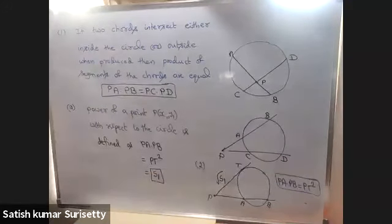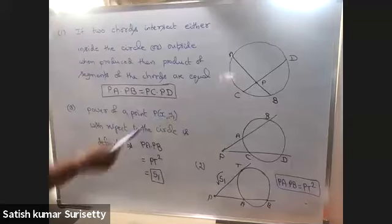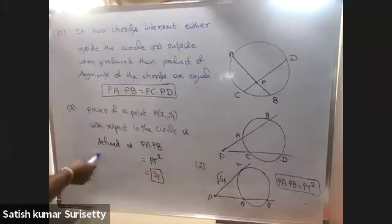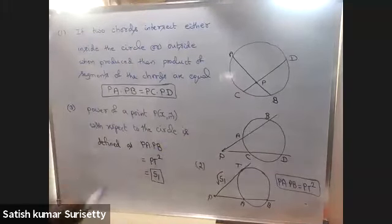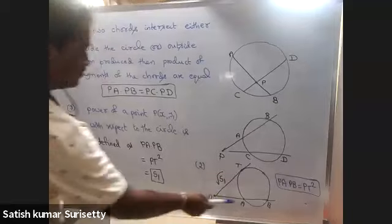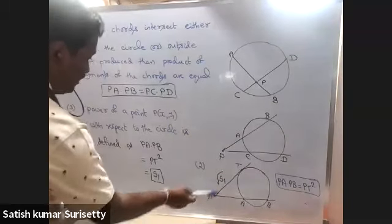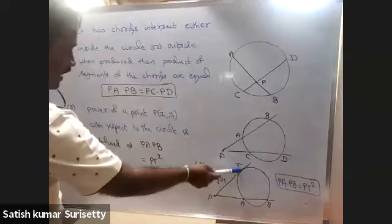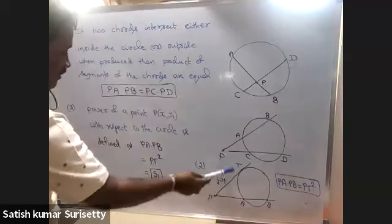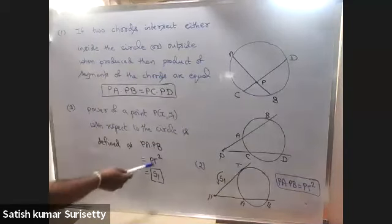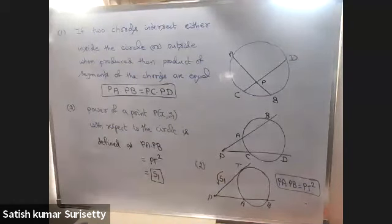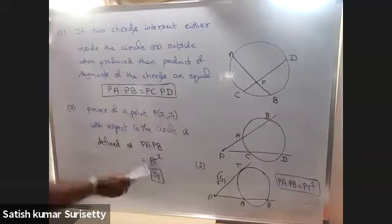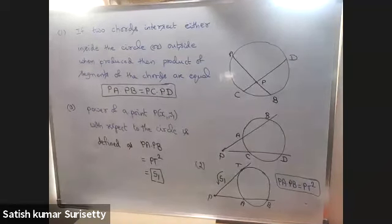One more concept: the power of a point P(x1, y1) with respect to a circle is defined as PA into PB. But PA into PB equals PT squared. PT is the length of the tangent, which equals root of S1. So PT squared equals S1. When you want to calculate the power of point P(x1, y1), you calculate S1 directly.